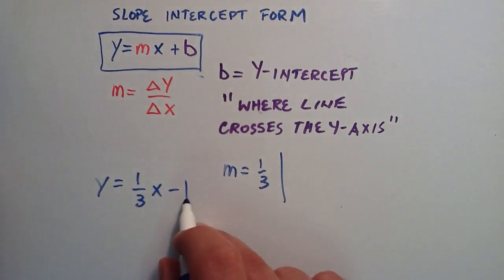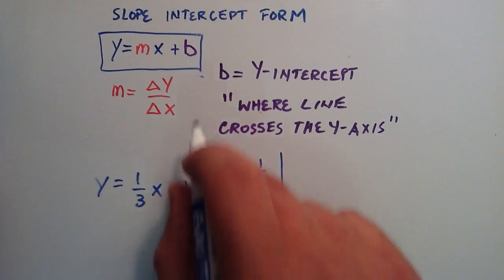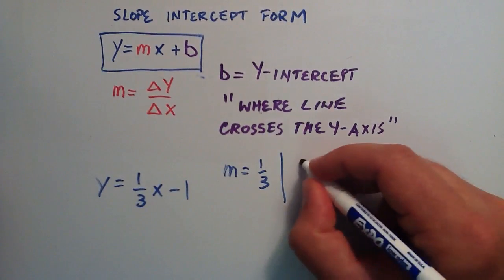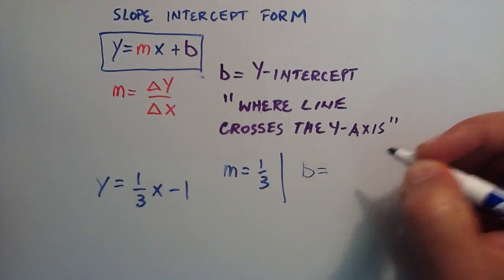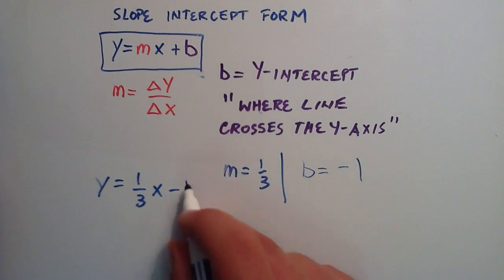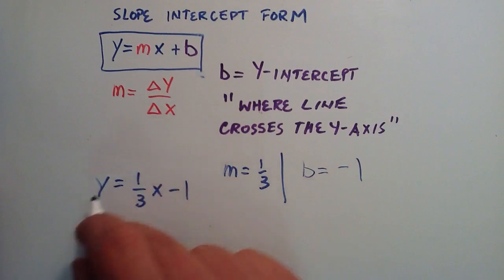And we have the x, and then we have the plus b here, and we have a negative one here. So negative one is the same thing as plus a minus one. So the b becomes a negative one. b is our y-intercept, and it is a negative one.